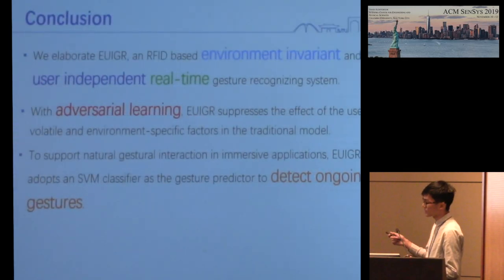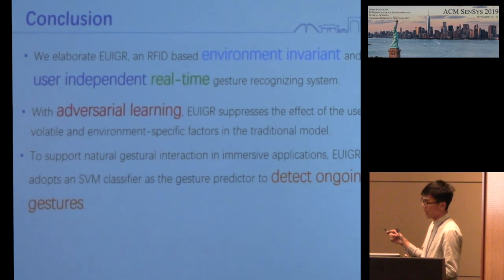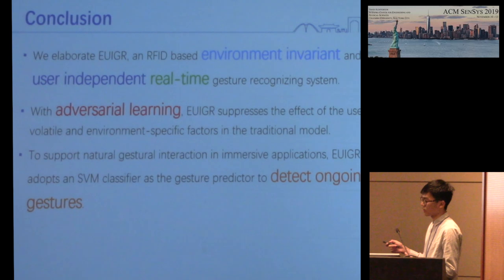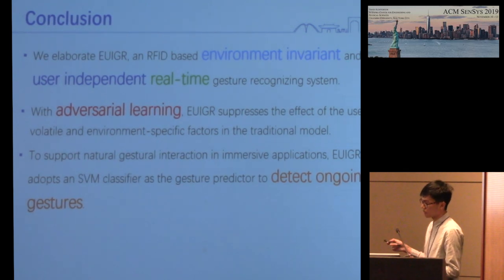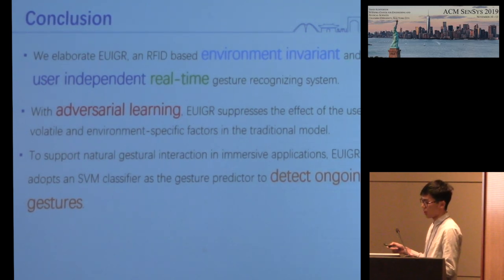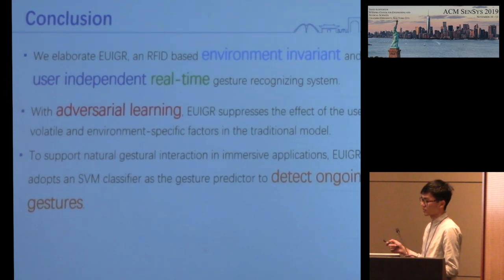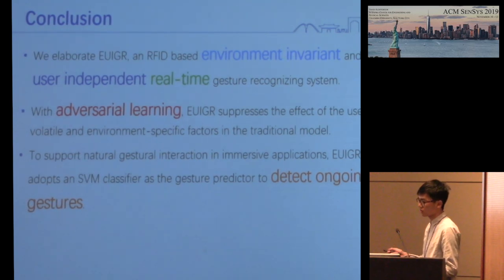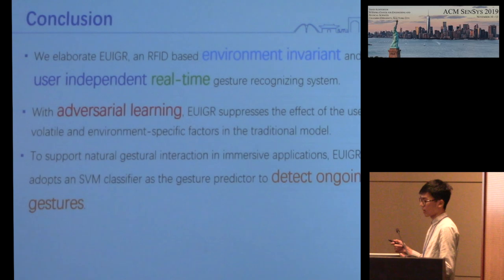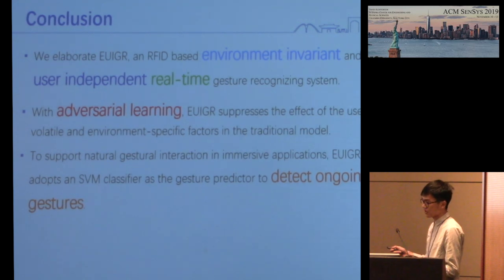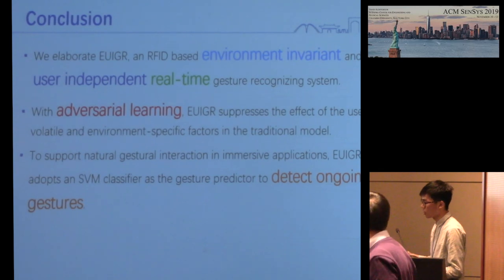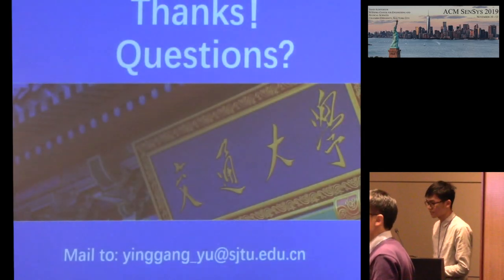Let's conclude. We present EUIGR, an environment and user-independent real-time gesture recognition system. With adversarial learning, EUIGR suppresses the effects of user variability and environment-specific factors in the traditional model. To support natural gesture interaction in immersive applications, EUIGR adopts an SVM classifier as the gesture predictor to detect ongoing gestures. Thank you.